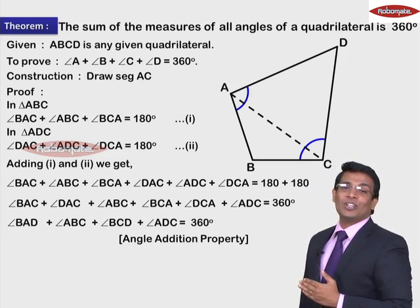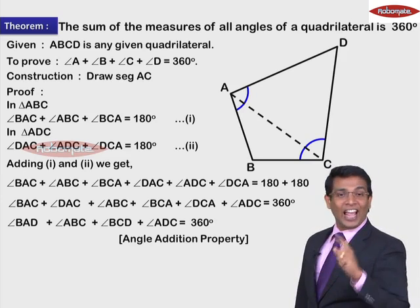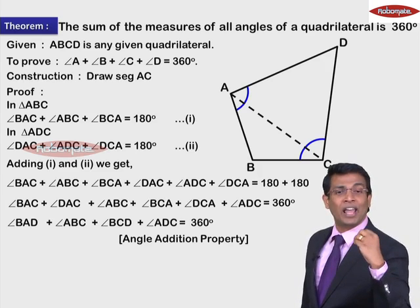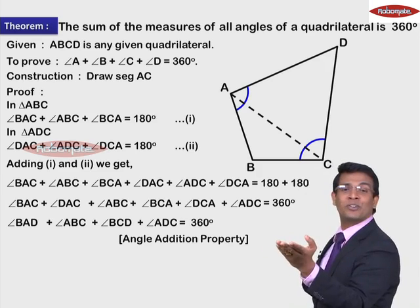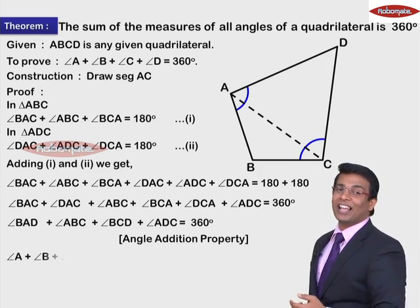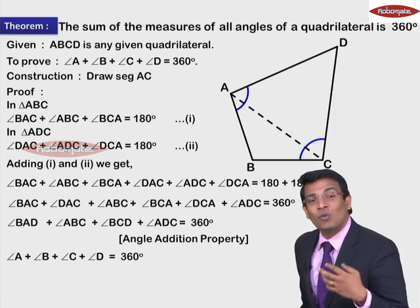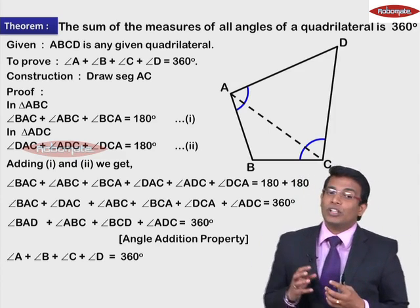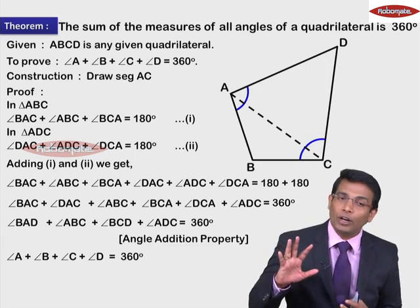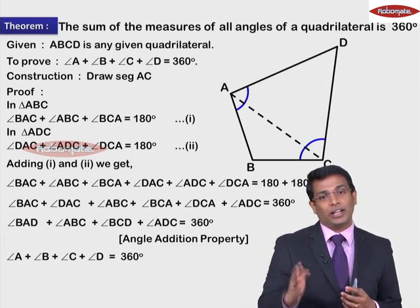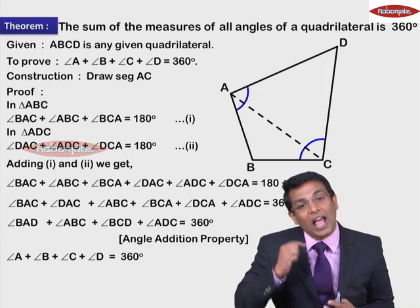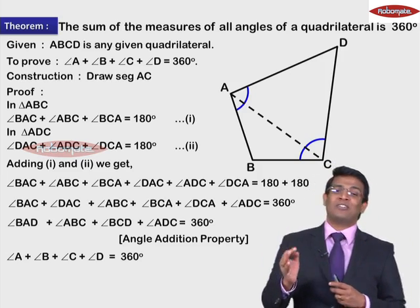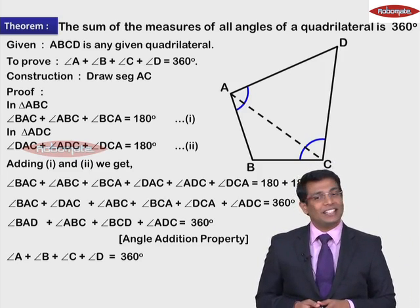In the next step, angle BAD is nothing but angle A, angle ABC is nothing but angle B, angle BCD is nothing but angle C, and angle ADC is nothing but angle D. So we get: angle A plus angle B plus angle C plus angle D is equal to 360 degrees. You got the proof! Whenever you use this theorem in any problem, you know the quadrilateral's angle sum is equal to 360 degrees, and you write the reason as the angle sum property of a quadrilateral.